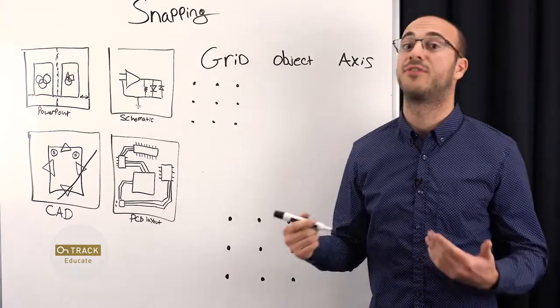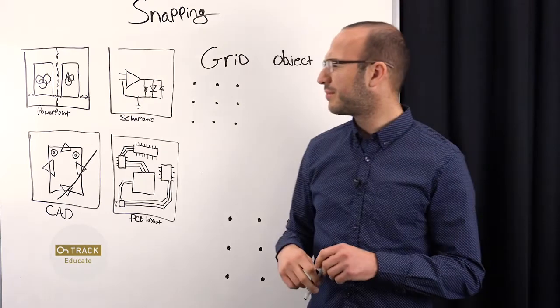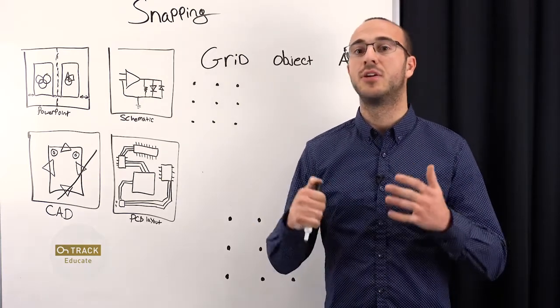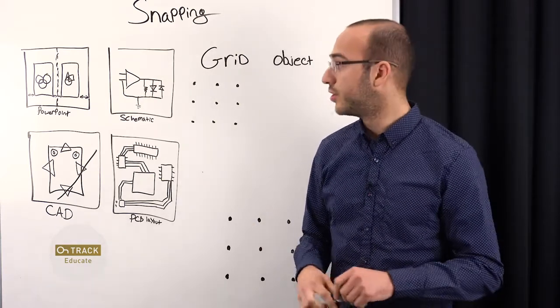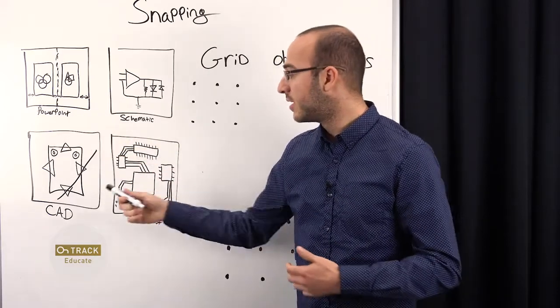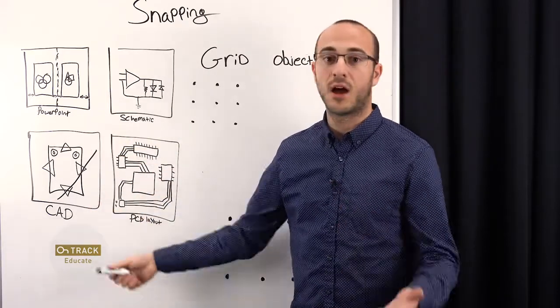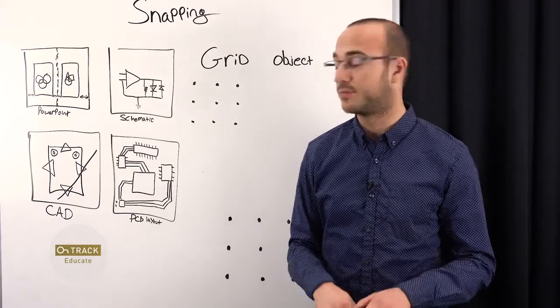First, let's talk about where you can find snapping. Snapping can be found in really any graphical software package. You can find it in something like PowerPoint, Google Slides, a 2D drawing tool like AutoCAD, or an engineering software like Altium Designer.